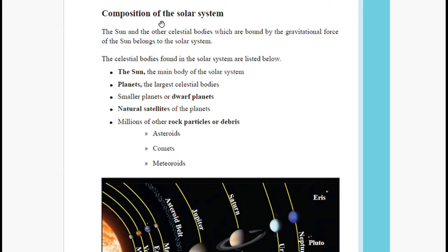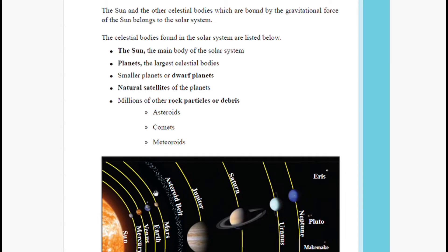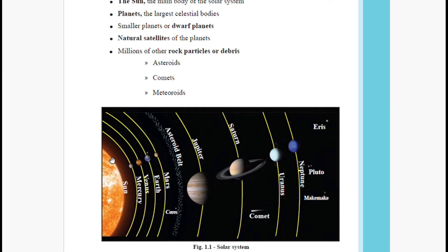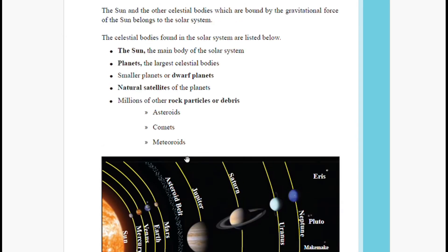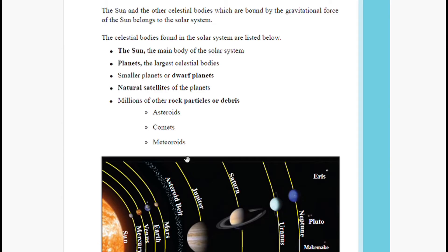The sun and the other celestial bodies which are bound by the gravitational force of the sun make up the solar system. The sun lies at the middle — it is the leader and the main body of the solar system. Just like a parent holds the family together, the sun holds all the planets and parts of the solar system by its gravitational force.